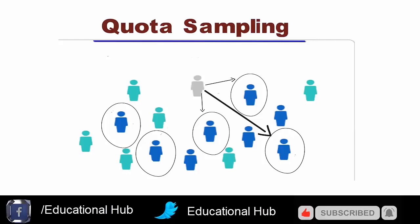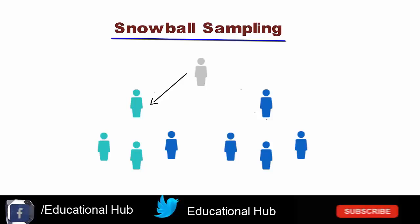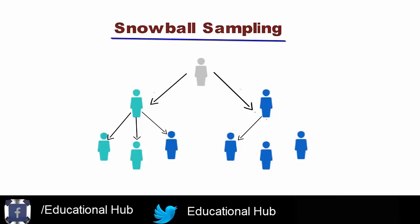2. Snowball sampling. Snowball sampling is a non-random sampling method that uses a few cases to help encourage other cases to take part in the study, thereby increasing sample size. This approach is most applicable in small populations that are difficult to access due to their closed nature.